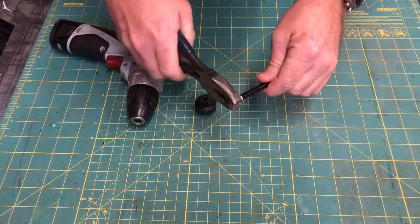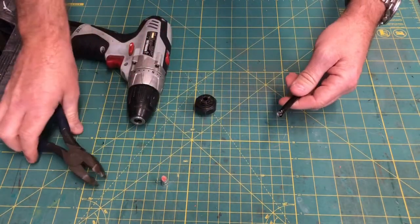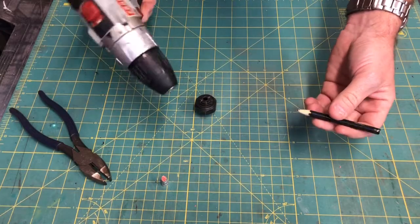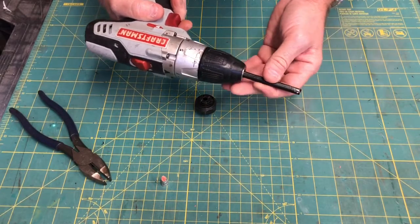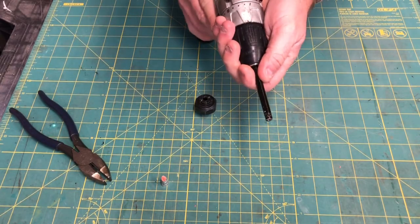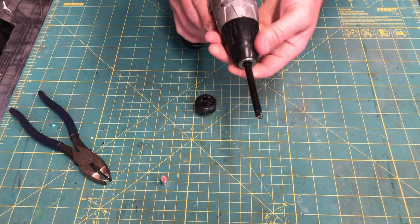Pull the end of the pencil off with the pliers. Insert the pencil, tip first, into the drill. Tighten the chuck down. Don't tighten it too much or you'll crush the pencil.